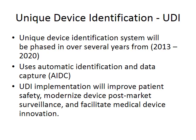Unique Device Identification (UDI) is now required by the FDA, phased in over a number of years starting in 2013, with full implementation predicted over the following seven years. For the most part, medical devices will have to have a UDI on them — this could be a barcode — and it must enable automatic identification and data capture by a computerized system. The UDI provides full traceability from the manufacturer to the end product, staying with the device throughout its lifecycle and available in a database.